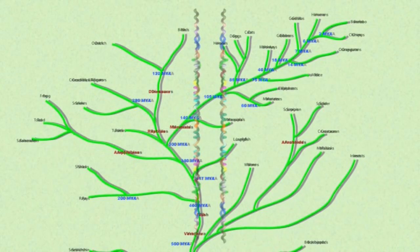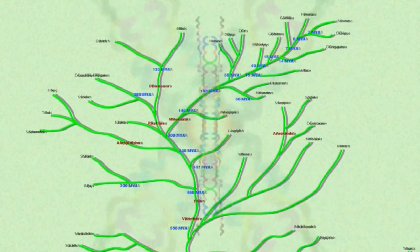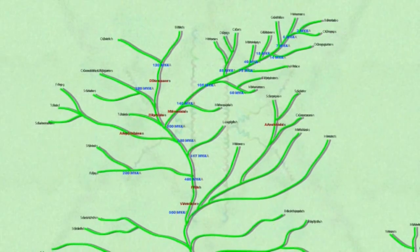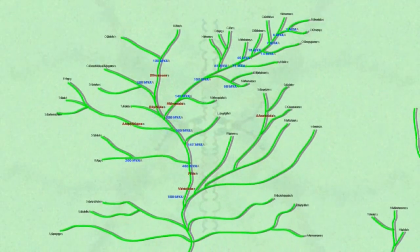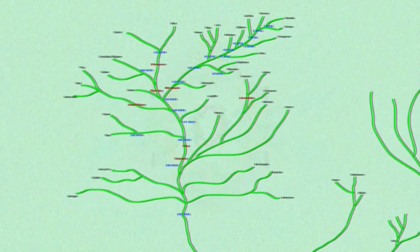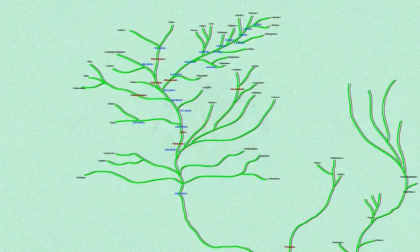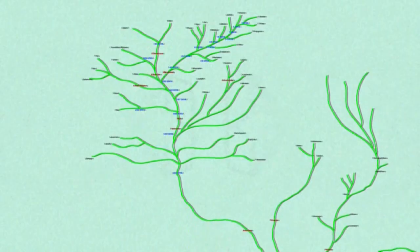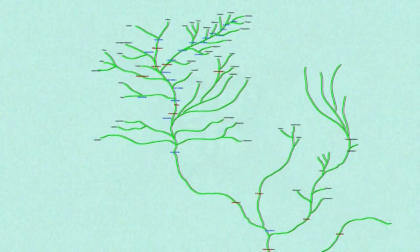If there were no common ancestor from whom all life inherited this code, it would make sense to expect a wide variety of codes. This would protect each species from interspecies viral infections. The lack of variety indicates common origin.